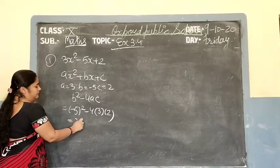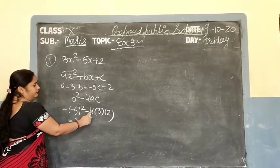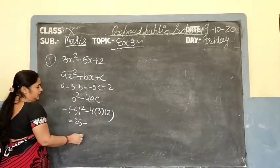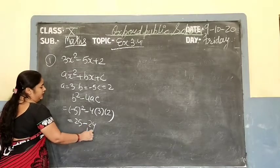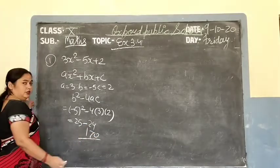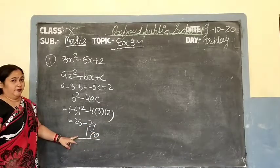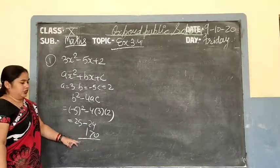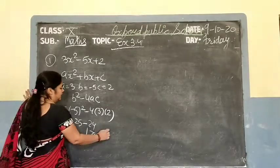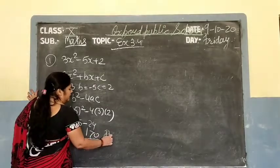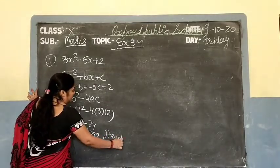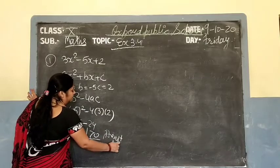5 squared is 25, 4 times 3 is 12, and 12 times 2 is 24. So discriminant is 25 minus 24 equals 1, which is greater than 0. Since it is greater than 0, the roots exist and are real roots.